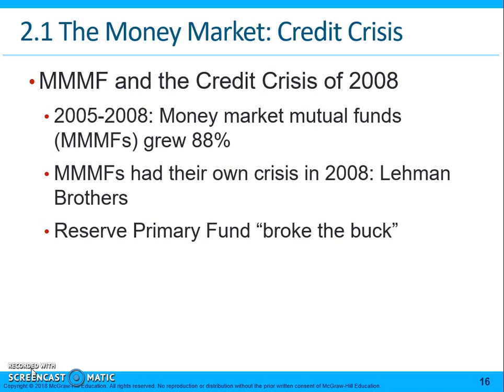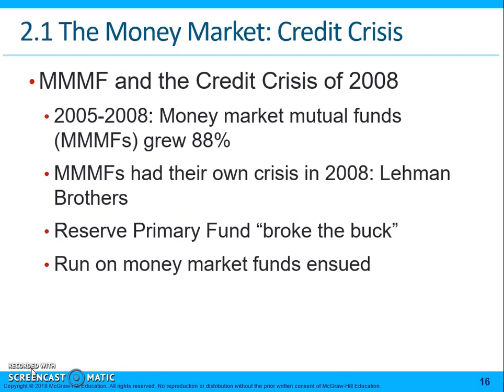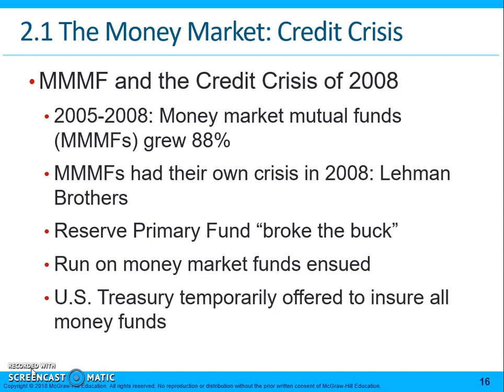A three percent loss is fairly considerable when we're talking about securities where investors very rarely, if ever, lose money. As a result of this, there was a run on all money market funds, and the US Treasury stepped in and temporarily offered to insure all money market mutual funds.